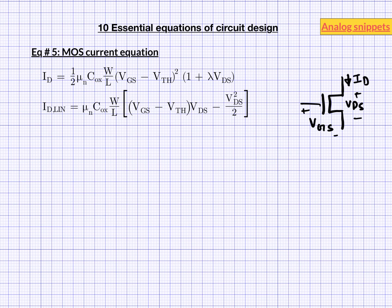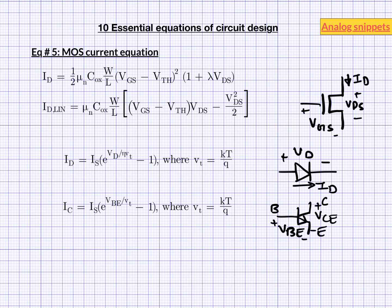Diodes and BJTs are other active devices used in circuit design. Diodes and BJTs have exponential current equations. When using these equations keep in mind that these are first order equations. The actual equations implemented in SPICE simulators are much more complicated.